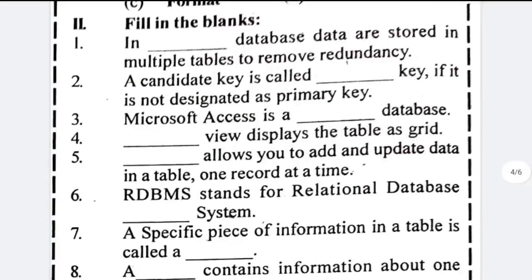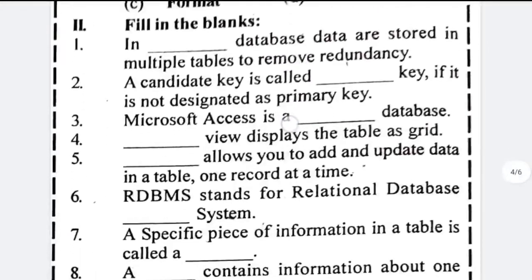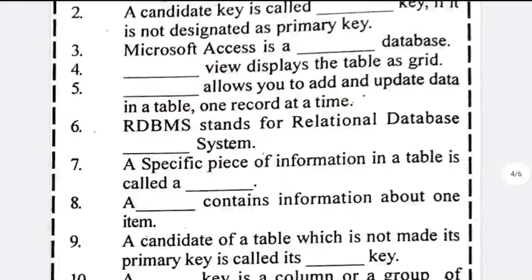Now fill in the blanks: Number 21 is not required. Form is omitted from the syllabus. In a database where data is stored in multiple tables, it is an RDBMS. A candidate key that is not designated as primary key is called an alternate key. Microsoft Access is a relational database.